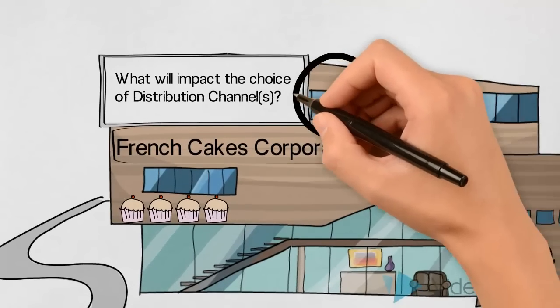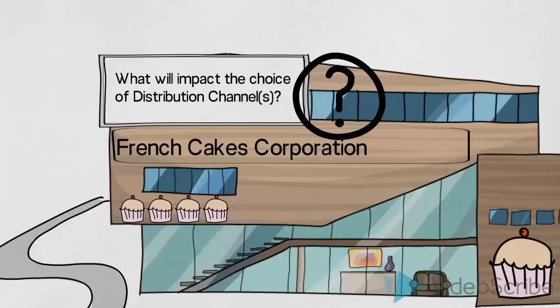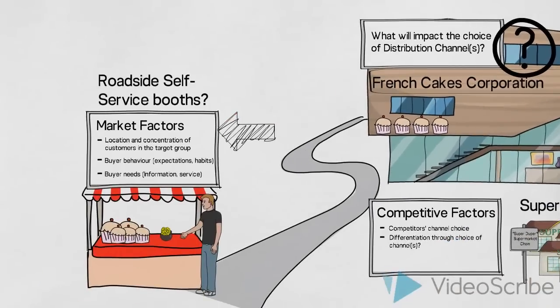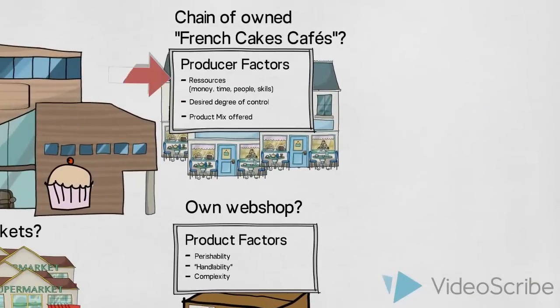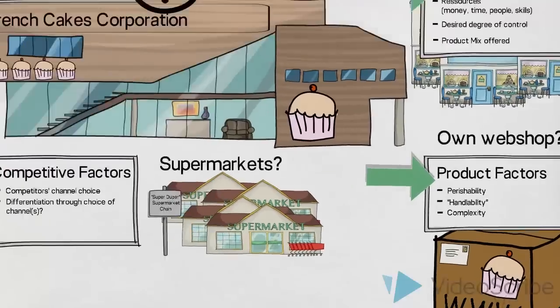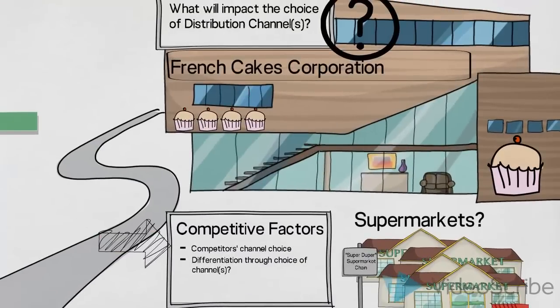So, when advising the company on their choice of distribution channels, we would look at some market factors, some factors about the French Cakes Corporation itself, factors about the products, and some factors in connection with the competitive situation.